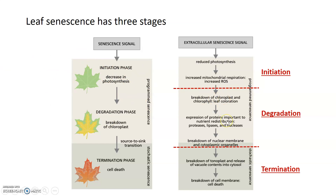We see the yellow and orange pigments coming through during this time when the chloroplast is breaking down. Protein expression changes: proteins involved in degradation like proteases, lipases, and nucleases are upregulated, and most of these proteins are also involved in redistributing nutrients — moving them from leaves to the rest of the plant or from the plant to the rest of the leaves. Expression of enough of these degradative enzymes allows them to start breaking down other organelles as well as the nuclear membrane.